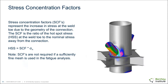Those last two items — weld defects and residual stresses — are taken care of by what we call the SN curve. But the first item, the stress concentration factor, needs to be considered separately, usually by applying a stress concentration factor. The SCF increases the nominal stress to give us what we call hot spot stress, or the stress at a certain point in the connection due to the nominal stress.